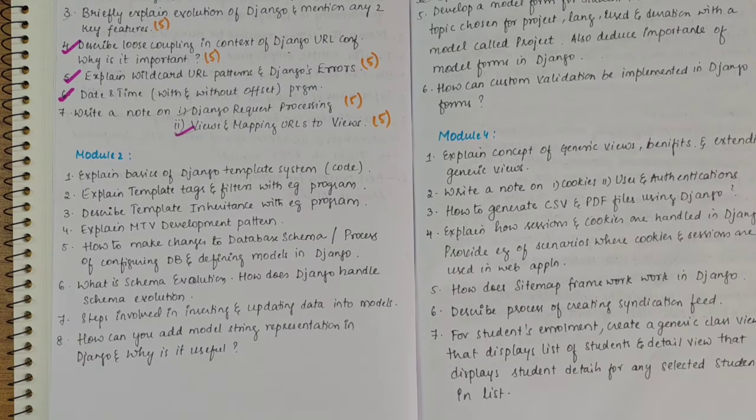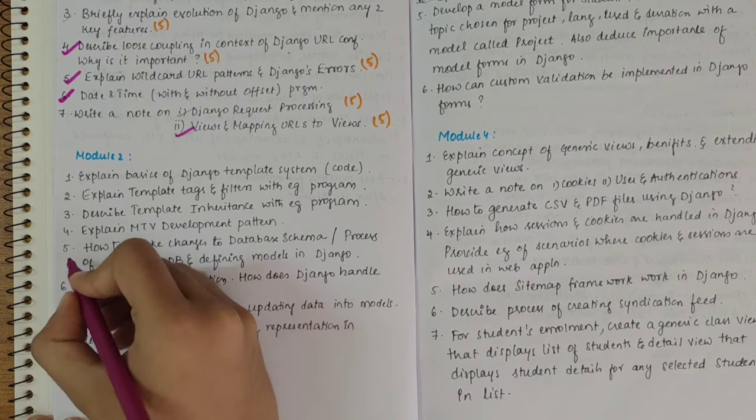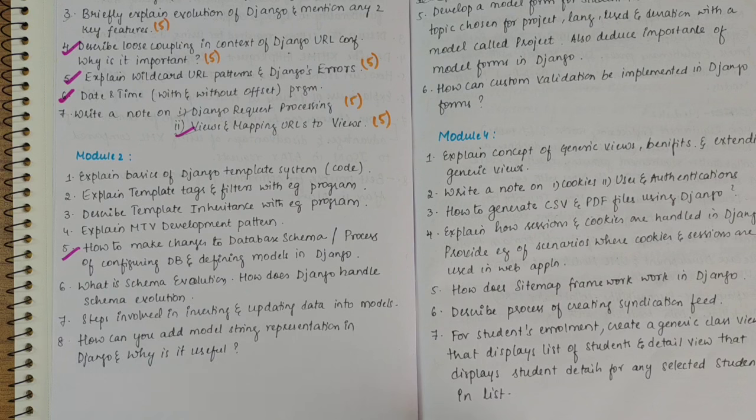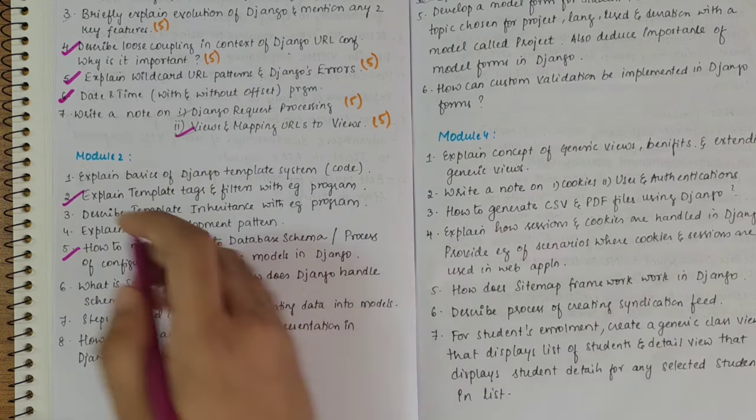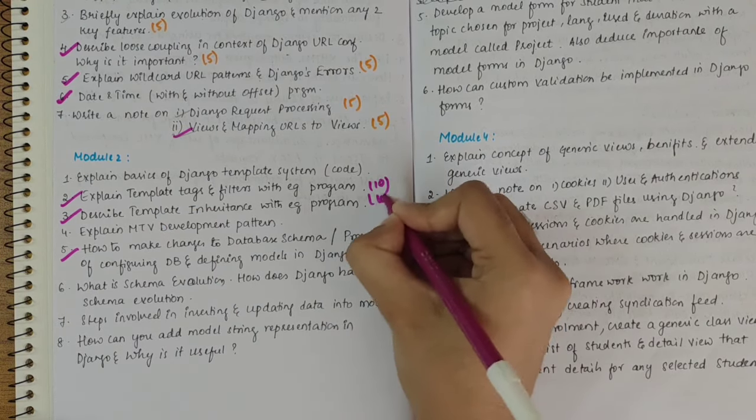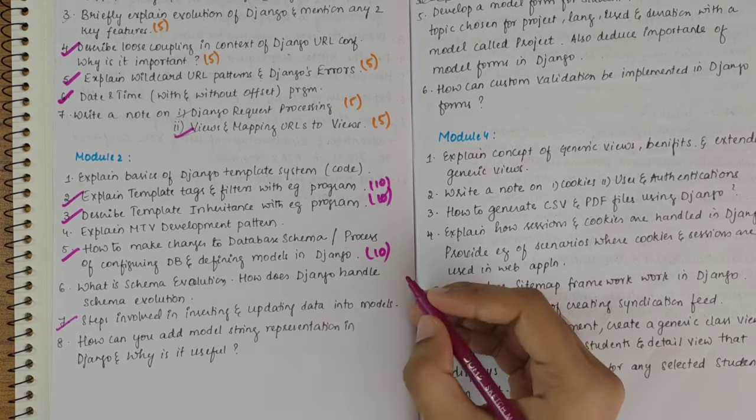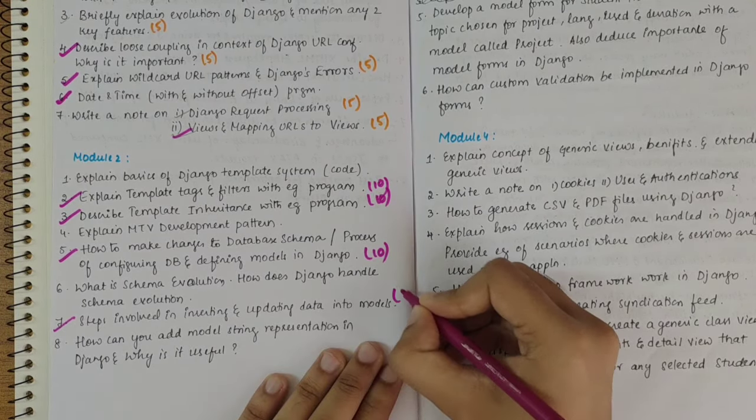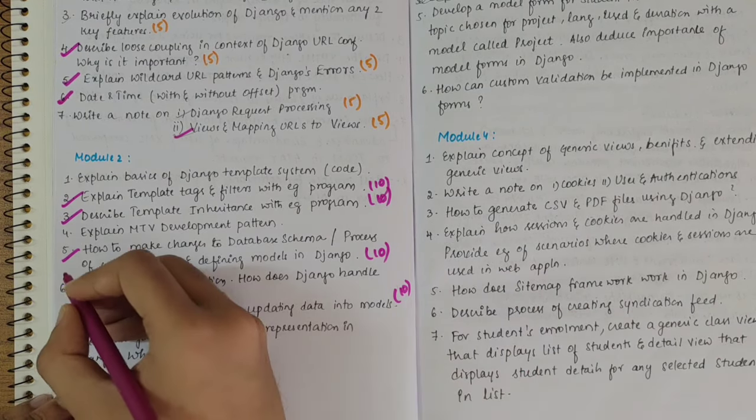In second module also, we have one standard program to write, that is how do we make changes to the database or schema and process of configuring database and defining models in Django. And along with this, we also have template tags and filters example program. Then we have template inheritance example program. So these are 10 mark questions. Then steps involved in inserting and updating data in models, so 10 mark question again. So what is schema evolution? How does Django handle schema evolution? 10 marks.